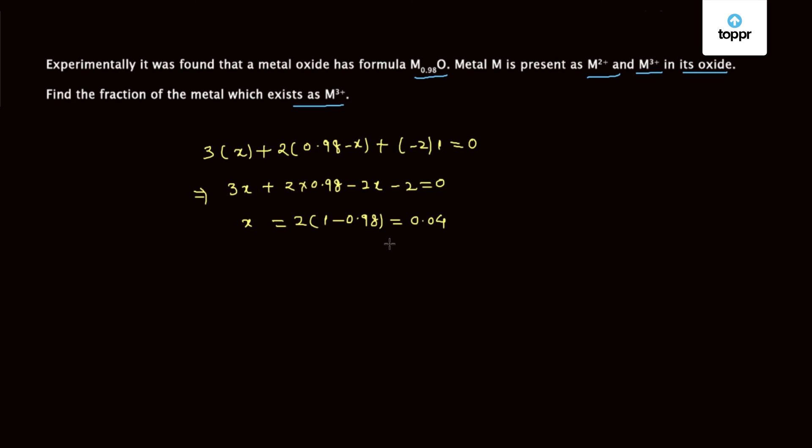The number of moles of M which exist as M3+, so the fraction will be 0.04 divided by the total moles of M, which is 0.98, times 100. This gives 4.98 percent. The fraction of metal which exists as M3+ is 4.98 percent.